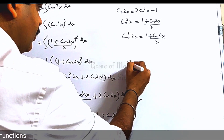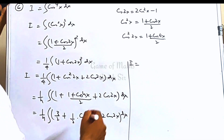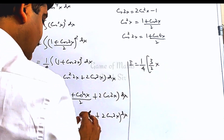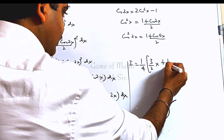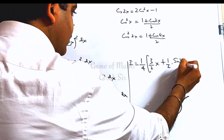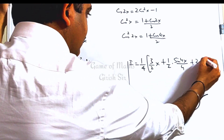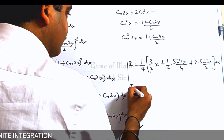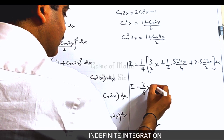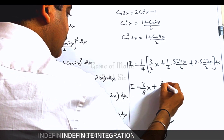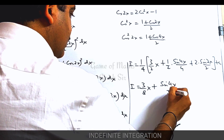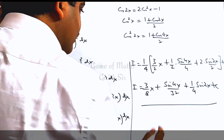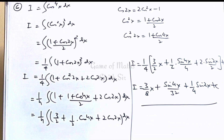Now if you integrate these terms, you get (3/8)x, then sin 4x divided by 4 times the constant factor, and sin 2x divided by 2, plus c. This would be the answer to the given question.